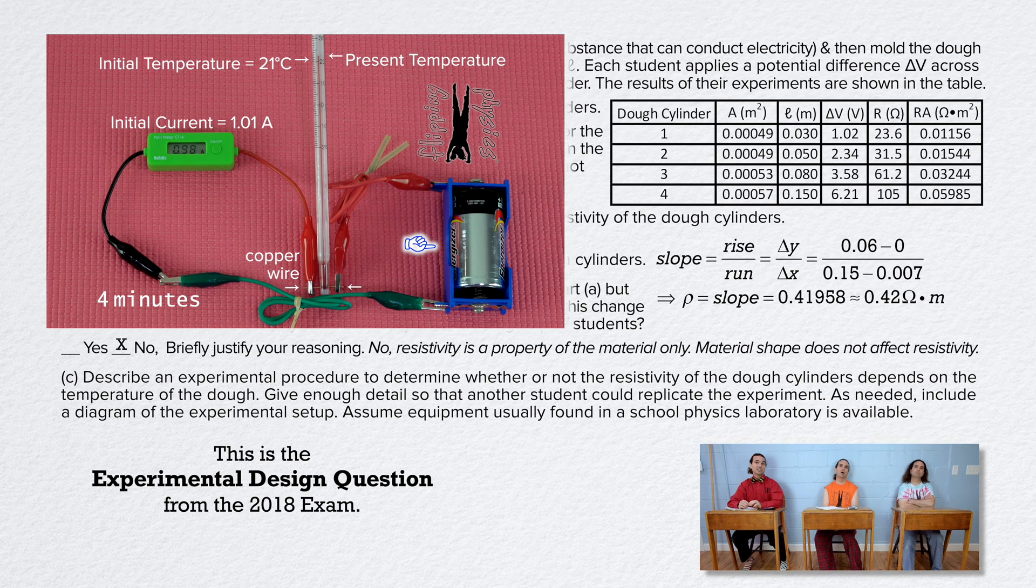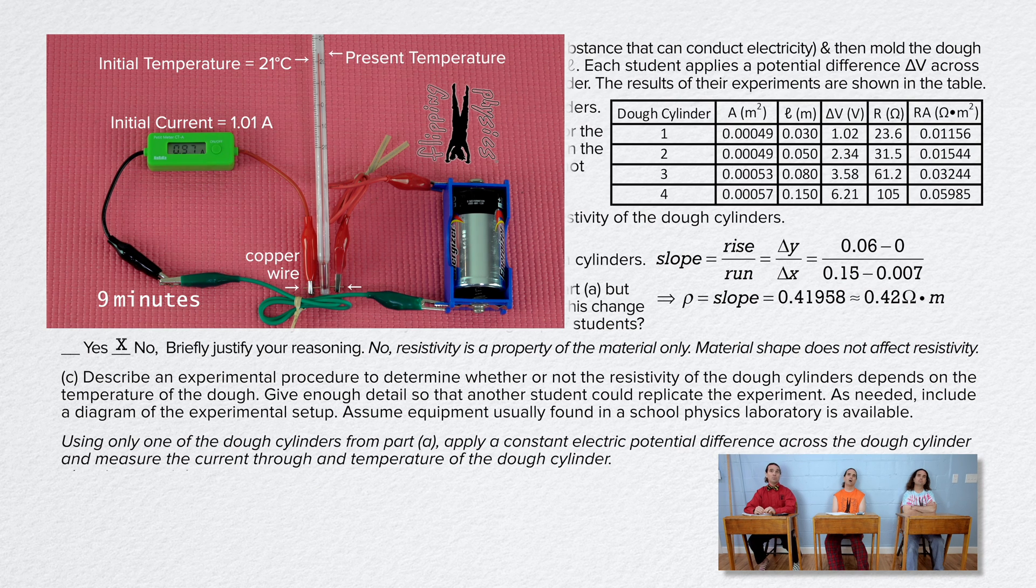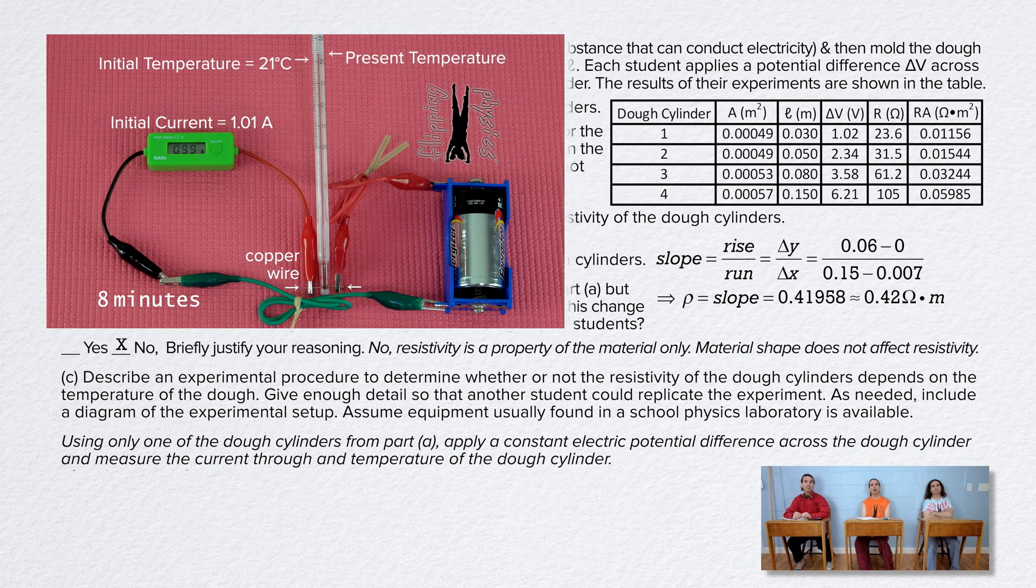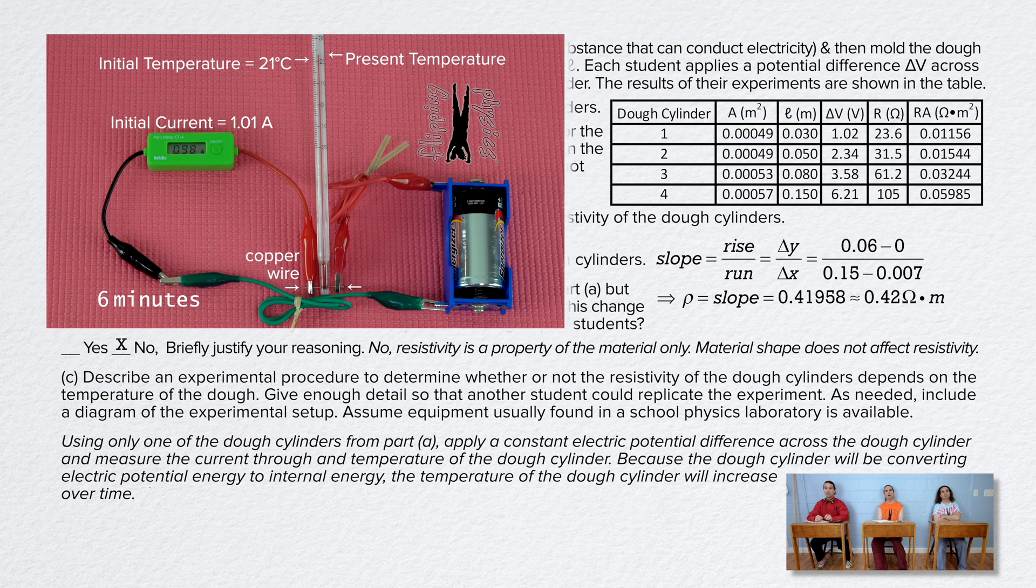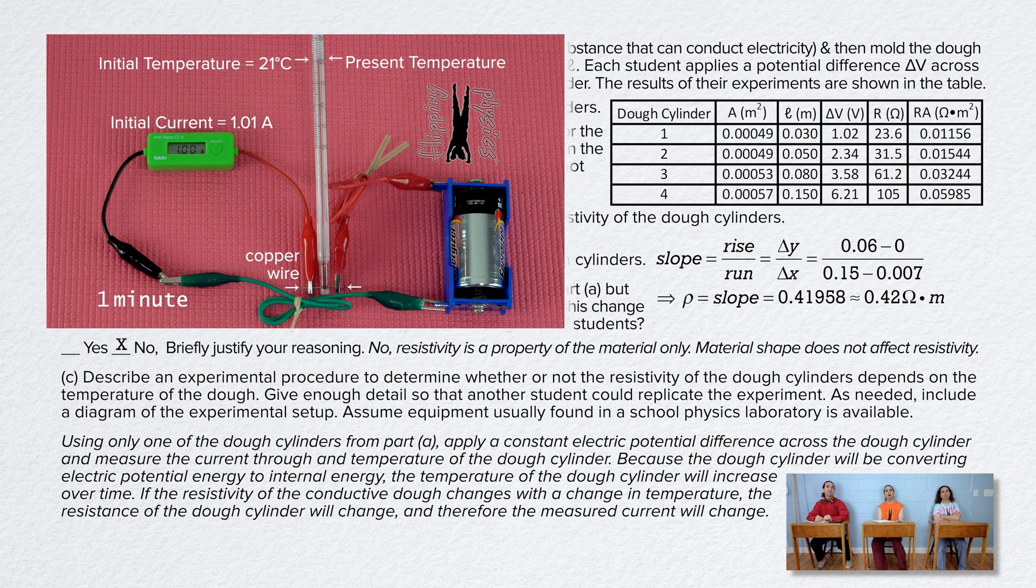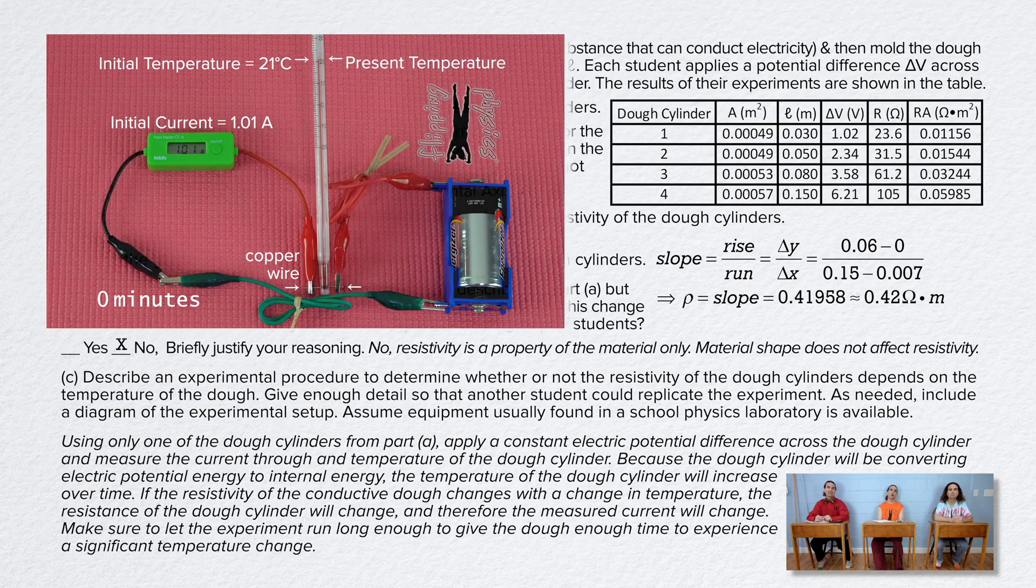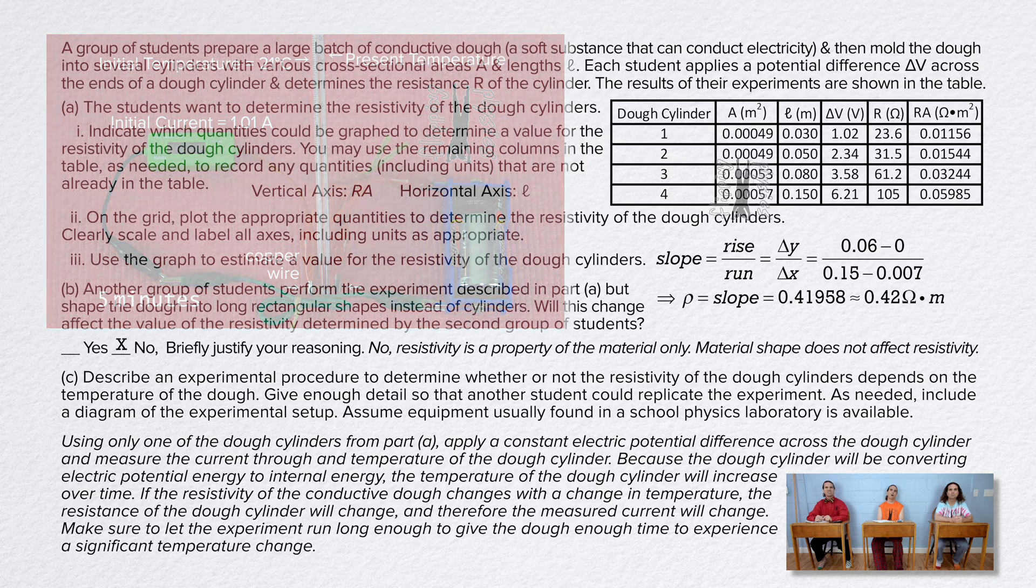Billy, what is your answer to part C? My answer is, using only one of the dough cylinders from part A, apply a constant electric potential difference across the dough cylinder and measure the current through and temperature of the dough cylinder. Because the dough cylinder will be converting electric potential energy to internal energy, the temperature of the dough cylinder will increase over time. If the resistivity of the conductive dough changes with a change in temperature, the resistance of the dough cylinder will change and therefore the measured current will change. Oh, and make sure to let the experiments run long enough to give the dough enough time to experience a significant temperature change. Wait, do I need a diagram?